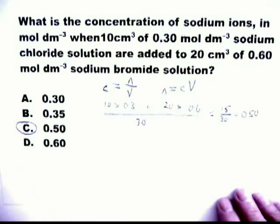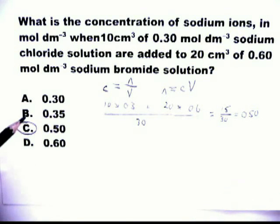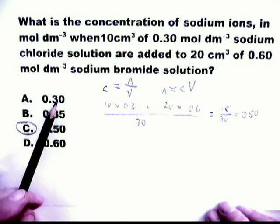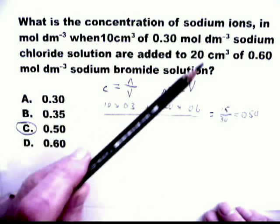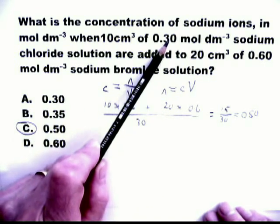Now, interestingly, you could have used the method of elimination, looking carefully at some of these answers. A, 0.3. Clearly that is not a possible concentration, because you started with one solution, which had a concentration of 0.3, and you added a stronger one.